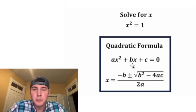It says if we have ax squared plus bx plus c equal to 0, we can solve for x by using these coefficients in this formula.